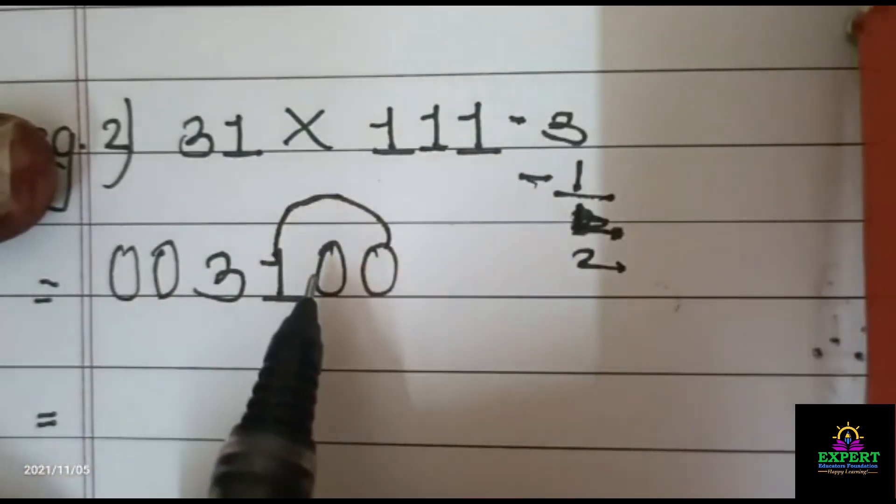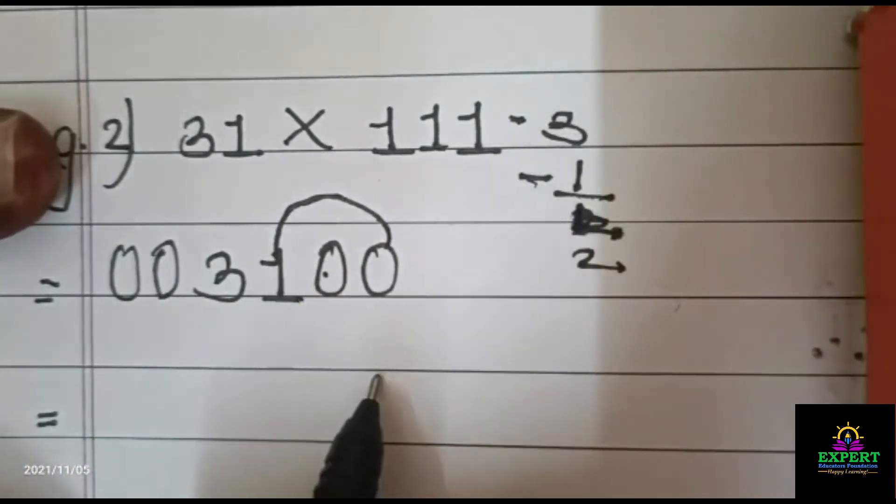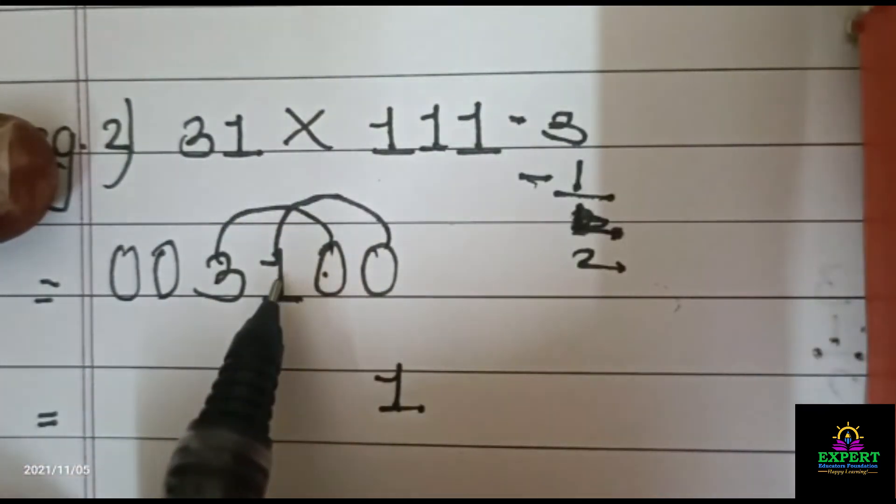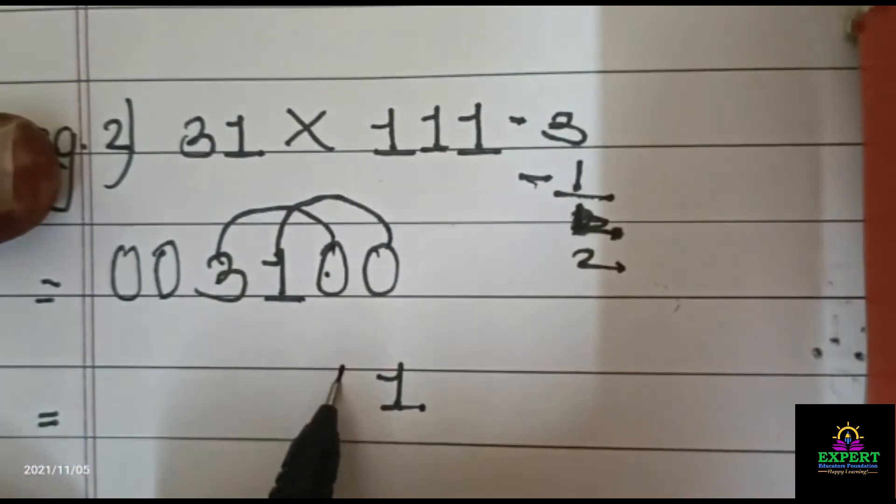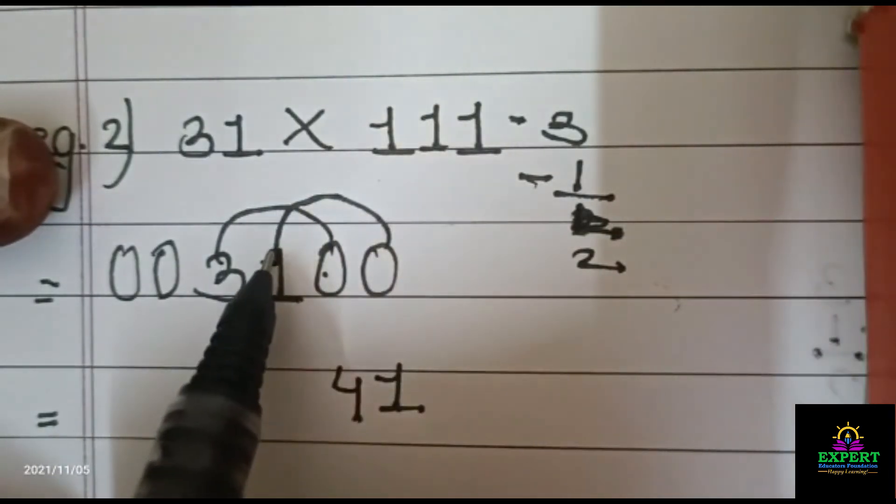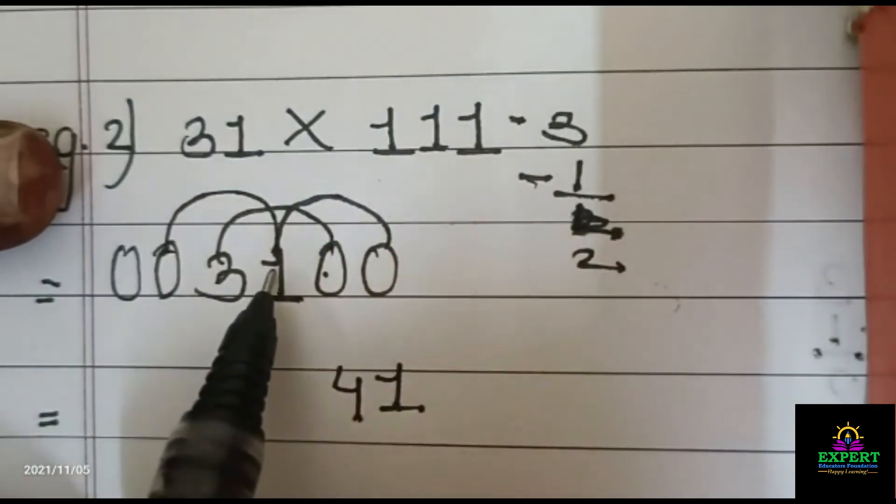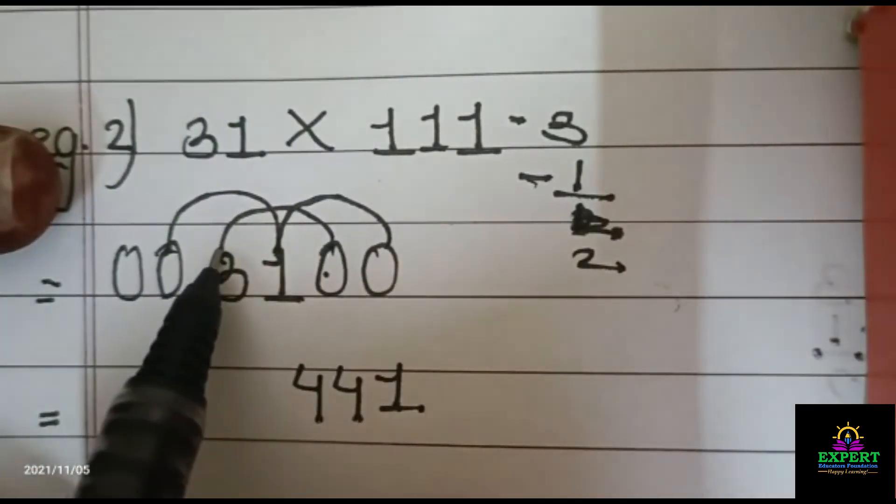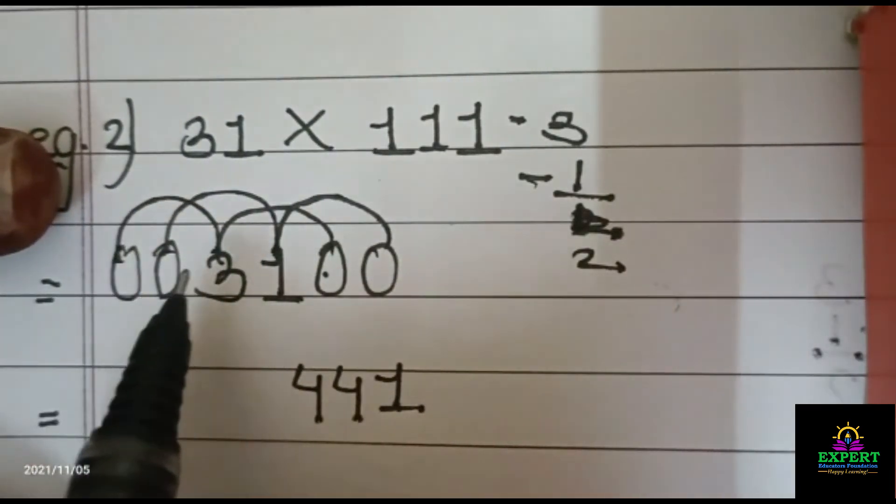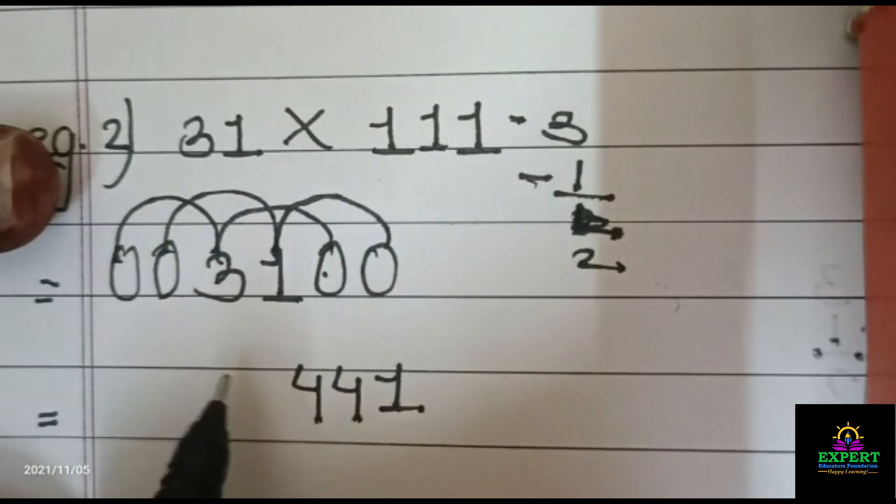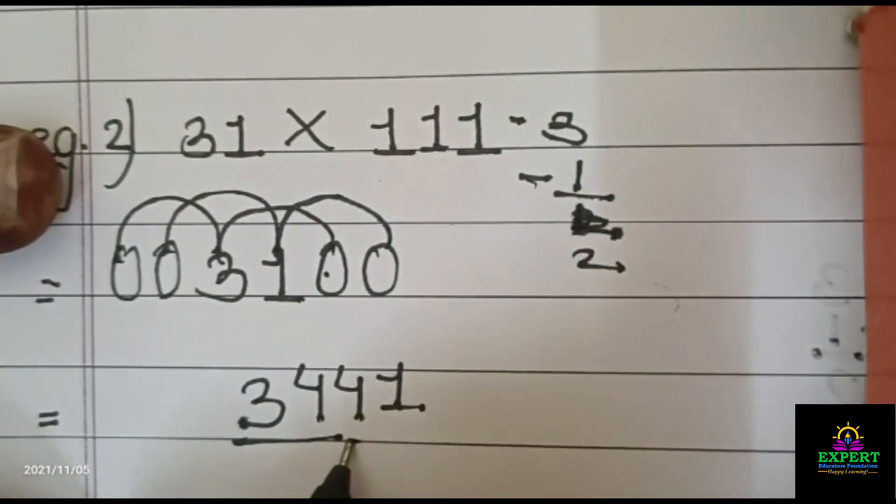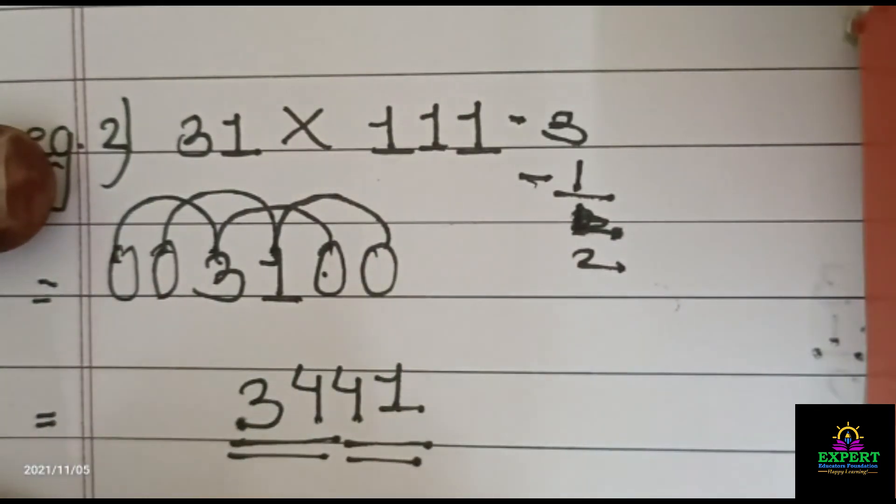So this 0 plus 0 plus 1 is equal to 1. 0 plus 1 plus 3 is equal to 4. Then 1 plus 3 plus 0 is equal to 4. Then 3 plus 0 plus 0 is equal to 3. Now your answer is 3441. So this is the method.